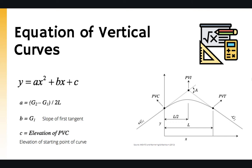To derive the equation of a vertical curve, we can assume a Cartesian coordinate system starting at the PVC, where x goes toward the ending point of the curve and y represents the elevation of each point along the curve. A vertical curve is a part of a parabola, so we write the parabolic equation y equals ax squared plus bx plus c, and by means of basic geometry we can derive the three parameters a, b, and c.